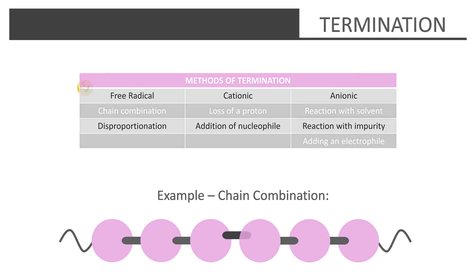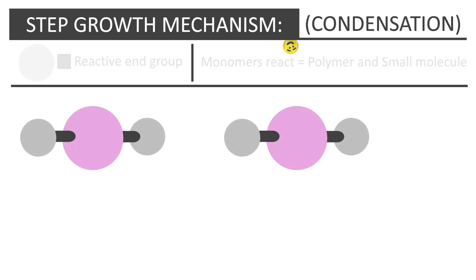Step-growth polymerization, commonly referred to as condensation polymerization, involves monomers which react to form a polymer and another small molecule, such as hydrochloric acid or water.